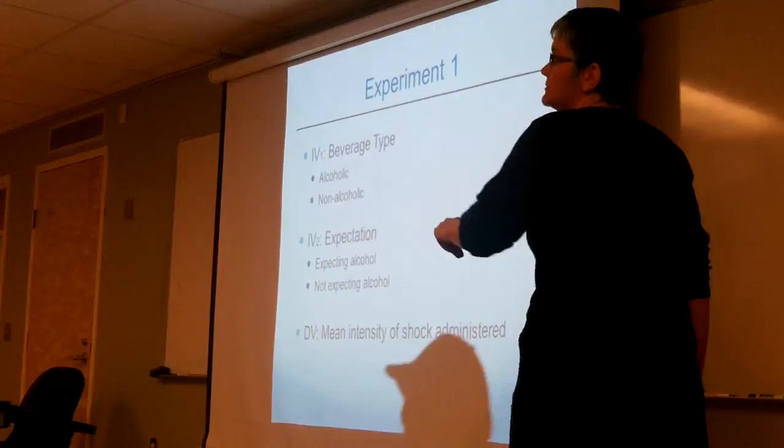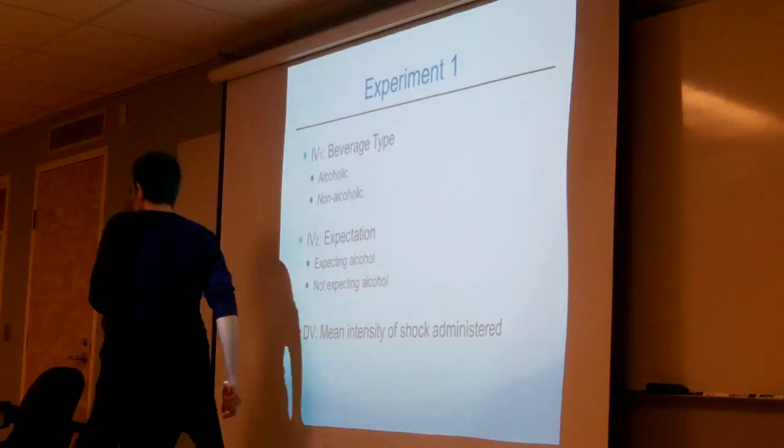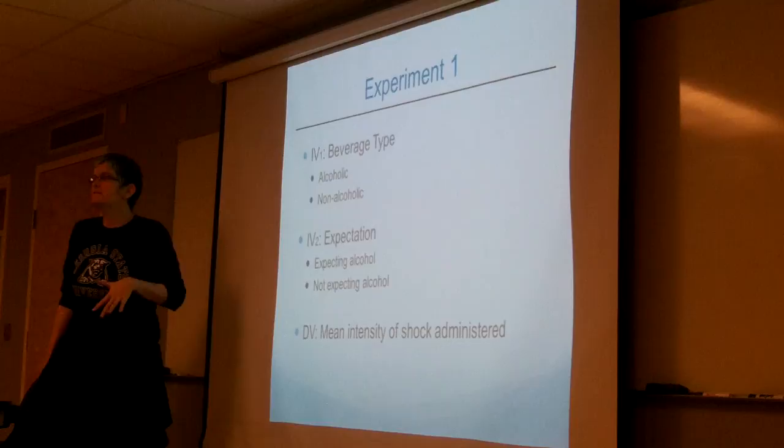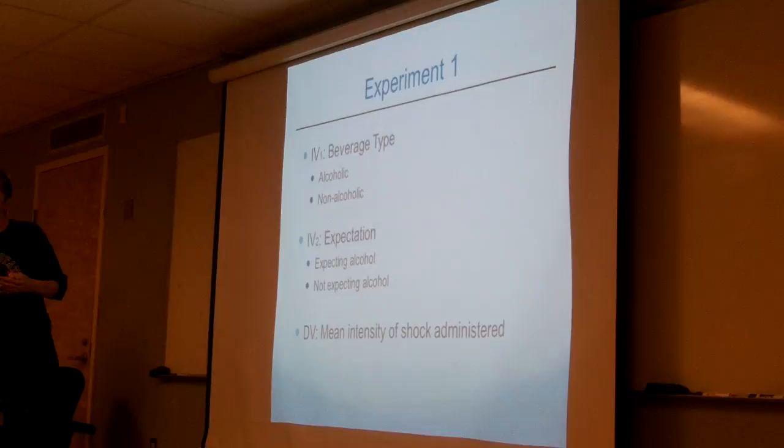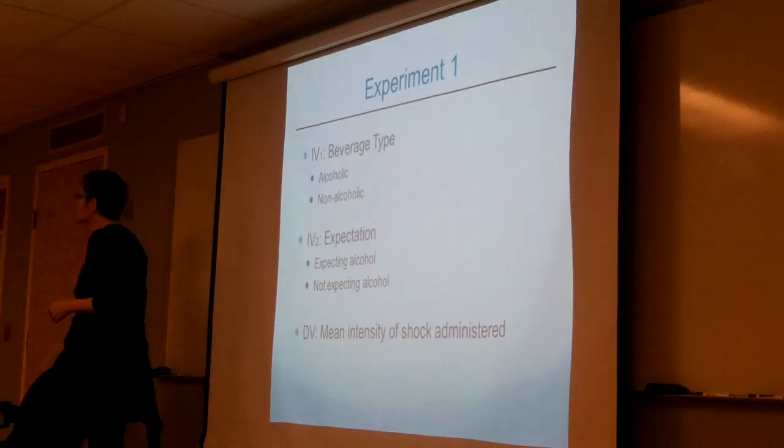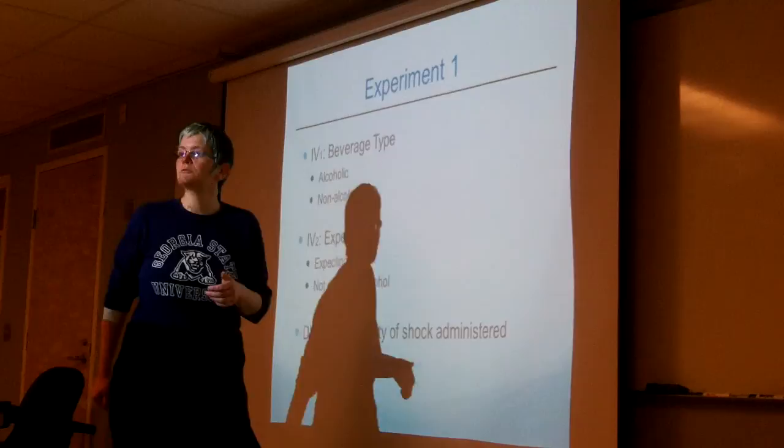Make sure you've got a handout, because you don't want to draw all these graphs - we've got a lot of graphs to look at today. We're going to start from a particular experiment and look at different possible outcomes for that experiment. Our experiment is a two-by-two random groups factorial design.